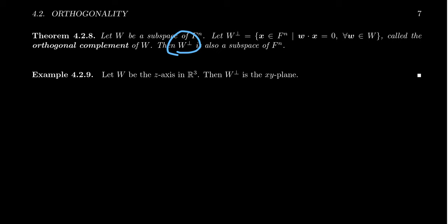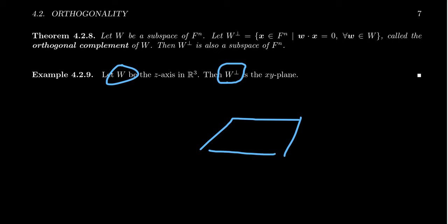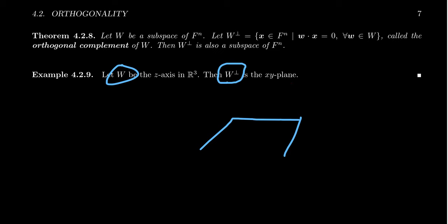I claim that W perp is going to be a subspace of Fⁿ. As a quick example, let's take as the subspace of R³ the Z axis — any line through the origin is a one-dimensional subspace of R³. The set of vectors orthogonal to the Z axis will be those vectors in the XY plane. Therefore W perp, the orthogonal complement to W, is the XY plane. The XY plane is perpendicular to the Z axis, and planes through the origin are subspaces.